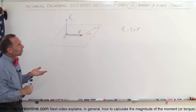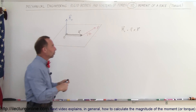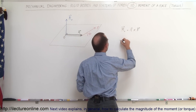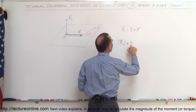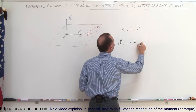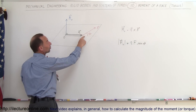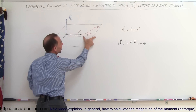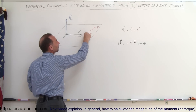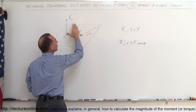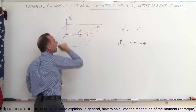Since it's a cross product we can also calculate the magnitude of the moment vector. The magnitude |M| is equal to the magnitude of the position vector times the magnitude of the force times the sine of the angle between the two — that angle theta. As the angle reaches 90 degrees the moment will be largest; as the angle becomes zero the moment goes down to zero.